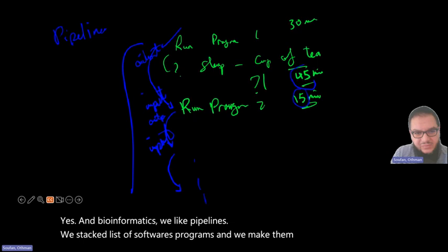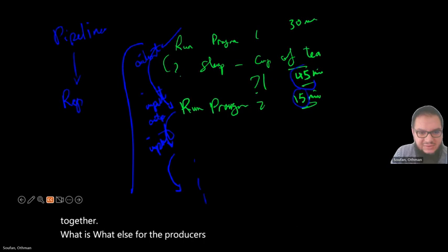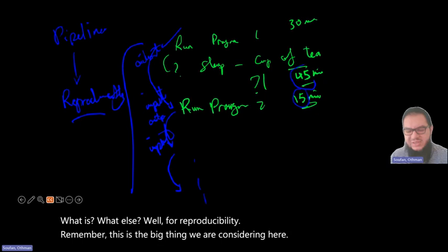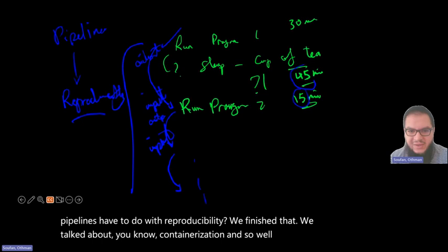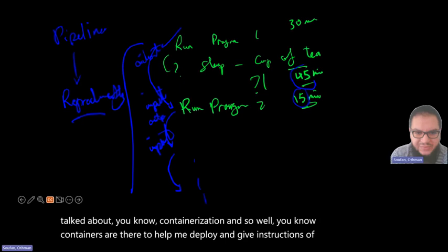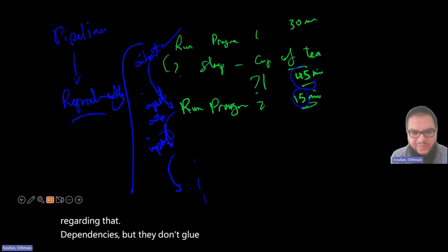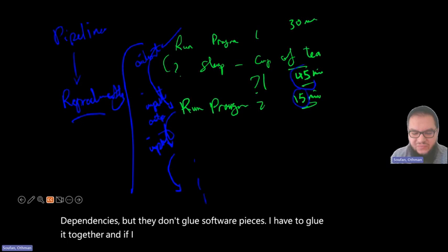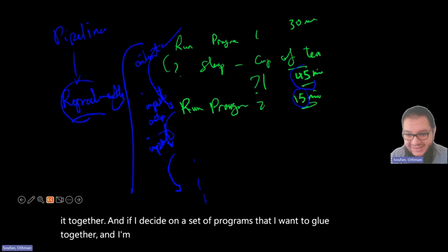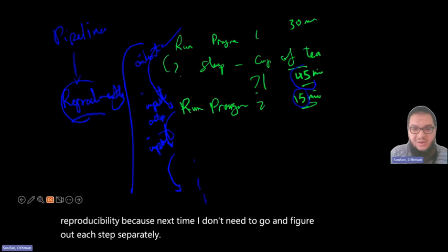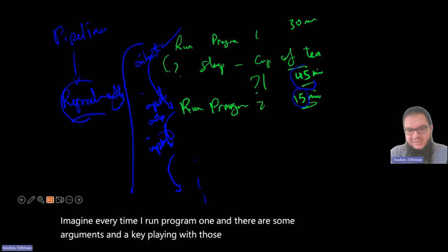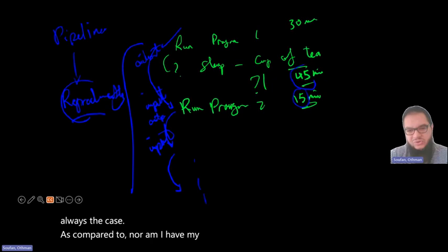If I decide on a set of programs to glue together and store that somehow, I may serve reproducibility — next time I don't need to figure out each step separately. But why do we call it a pipeline and not just a program? We are not actually writing code here — we are stacking a list of programs that others developed. What's going to be the biggest issue with that? Think about it — it's a treasure hunt question. What could be the issue with stacking a list of software or programs?